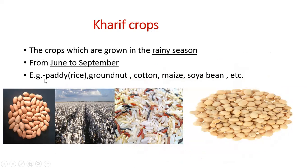Examples of Kharif crops are paddy (which we call rice), groundnut, cotton, maize, soybean, and others. You can see on the board: groundnut, cotton, rice, and soybean.